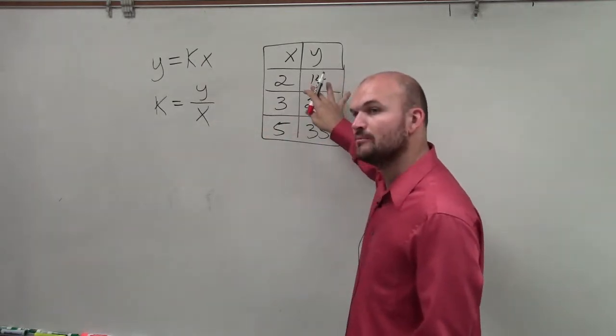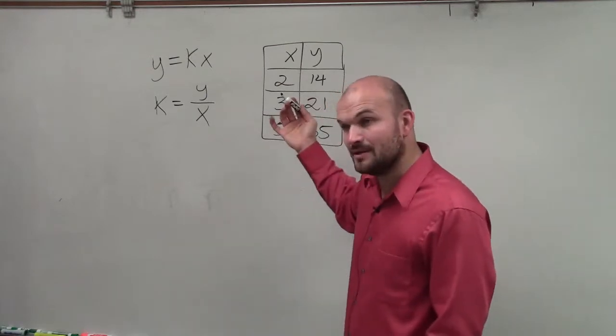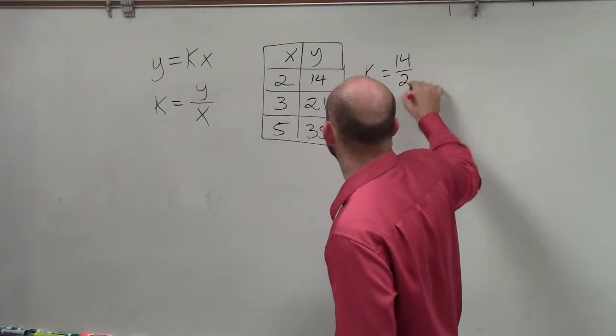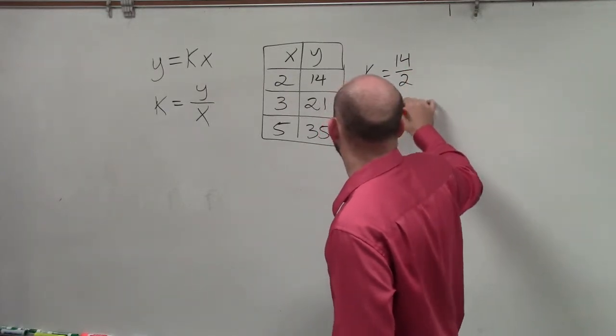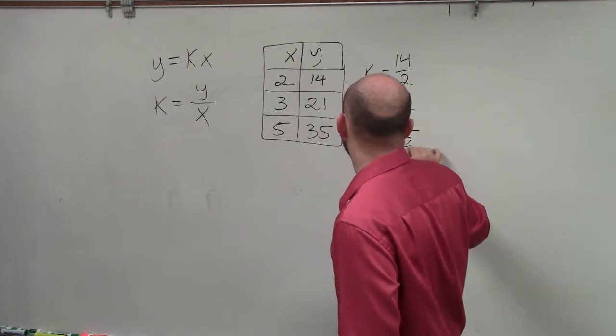So what we want to do is determine the value of k for each of these coordinates. And if it's the same, then we have direct variation. So I say k equals 14 over 2, k equals 21 over 3, and k equals 35 over 5.